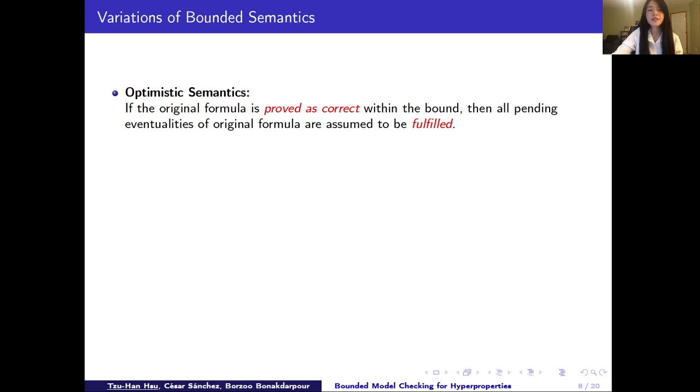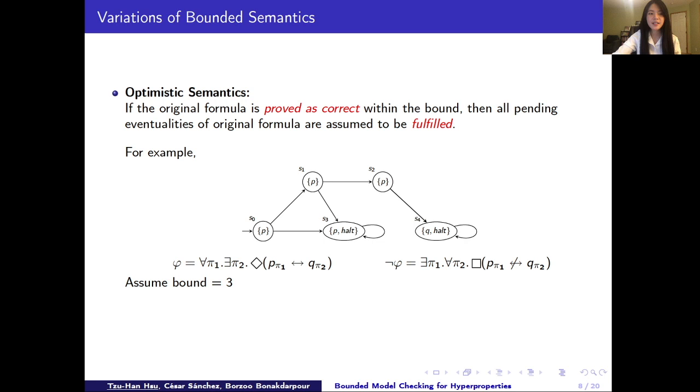Another semantics we are having here is optimistic semantics, which is completely dual with the pessimistic semantics. For optimistic, we say if the formula is witnessed as true within finite bound, then all future events are considered as fulfillable as well. So let's take the same example again. If now we want to evaluate the formula for pi 1, there exists pi 2 such that eventually p on pi 1 if and only if q on pi 2. Again, we set bound as 3 and look through all possible traces.